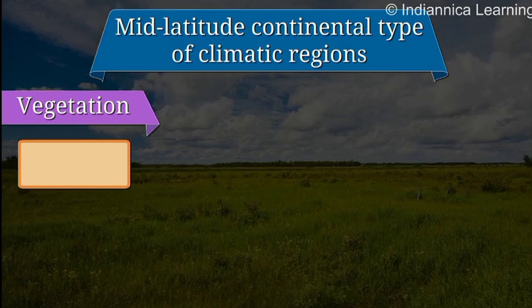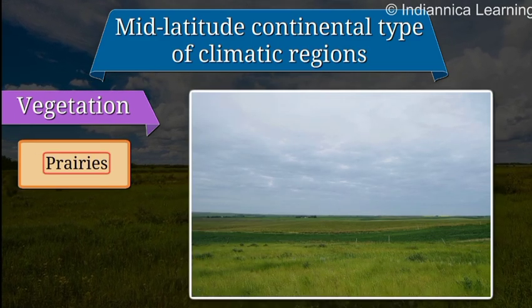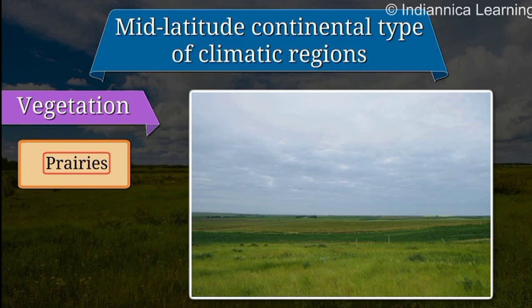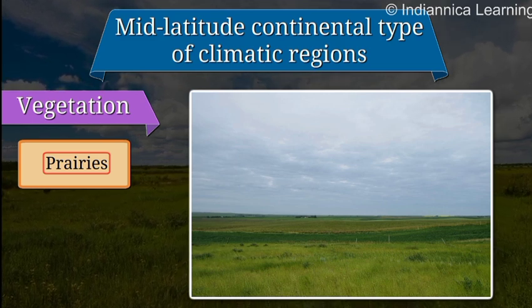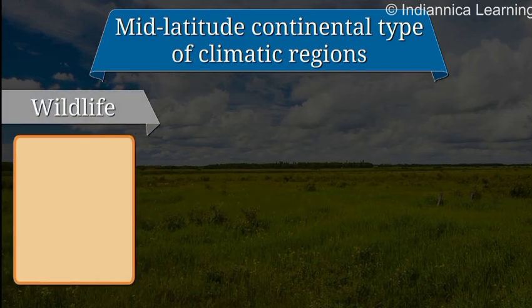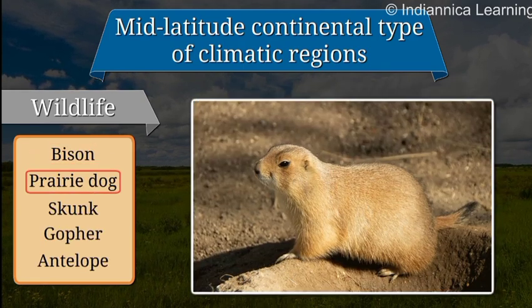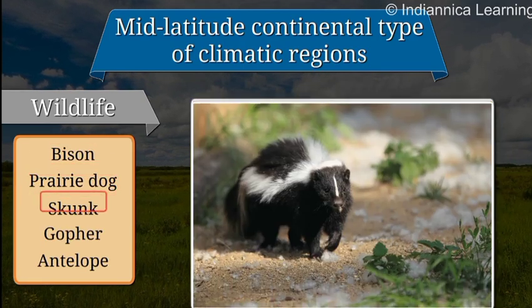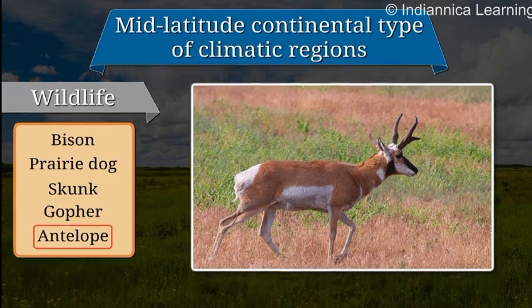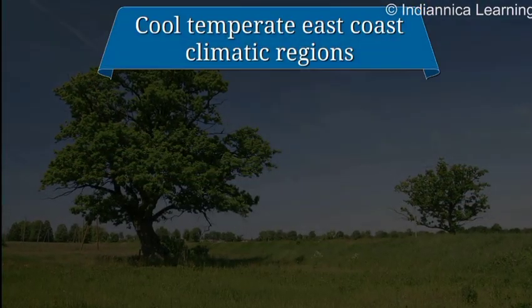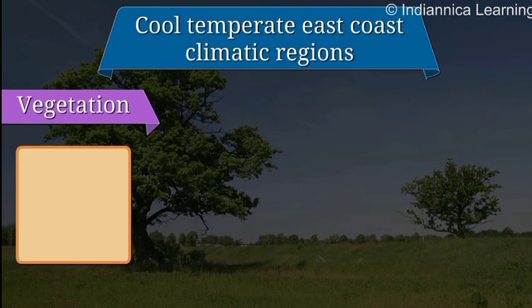Mid-latitude continental type: The regions with the mid-latitude continental type of climate have prairies. Prairies are the grasslands with tall grasses and scanty tree cover. The wildlife here includes the bison, prairie dog, skunk, gopher, and antelope.